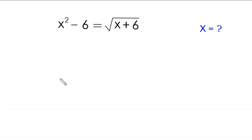Hello everyone, welcome to how to solve this very nice radical equation: x squared minus 6 is equal to the square root of x plus 6. Our job is to find all possible values of x, so let's start.